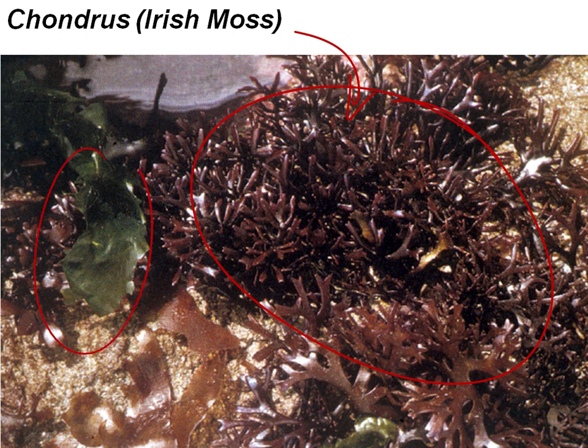This is Ulva. You know algae just like you were diving. Ulva and Irish moss are both flat sheets of cells. The Irish moss is a little more branched than Ulva, but still basically a flat sheet of cells.